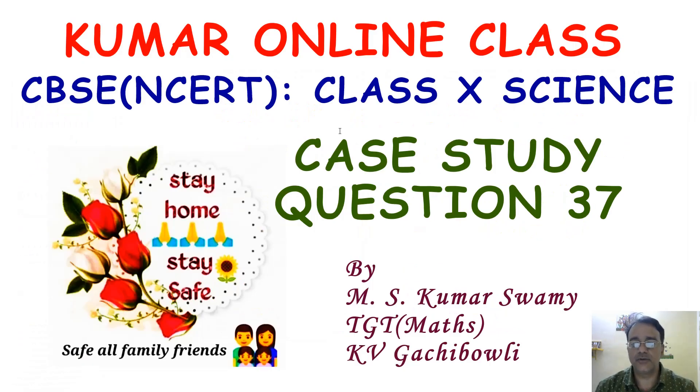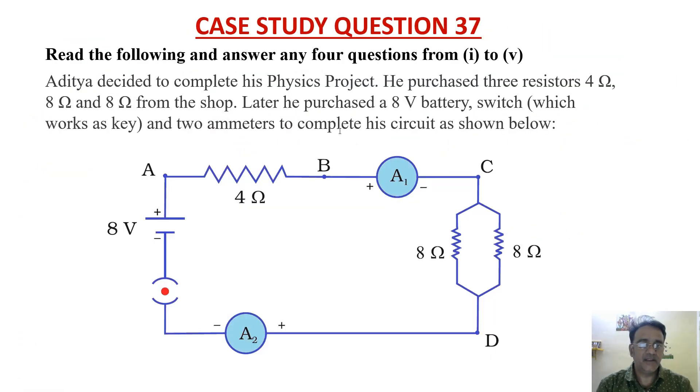Now we are going to start case study question number 37. The context is like this: Aditya decided to complete his physics project. He purchased three resistors: 4 ohm, 8 ohm and 8 ohm from the shop. Later he purchased an 8 volt battery switch which works as key and two ammeters to complete his circuit as shown below. So this is the circuit and based on this circuit some questions have been framed.